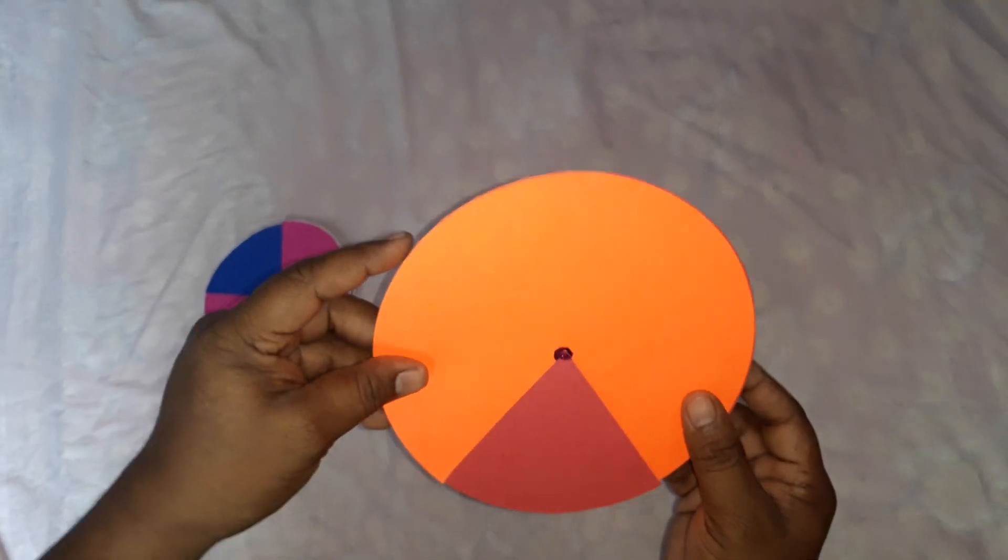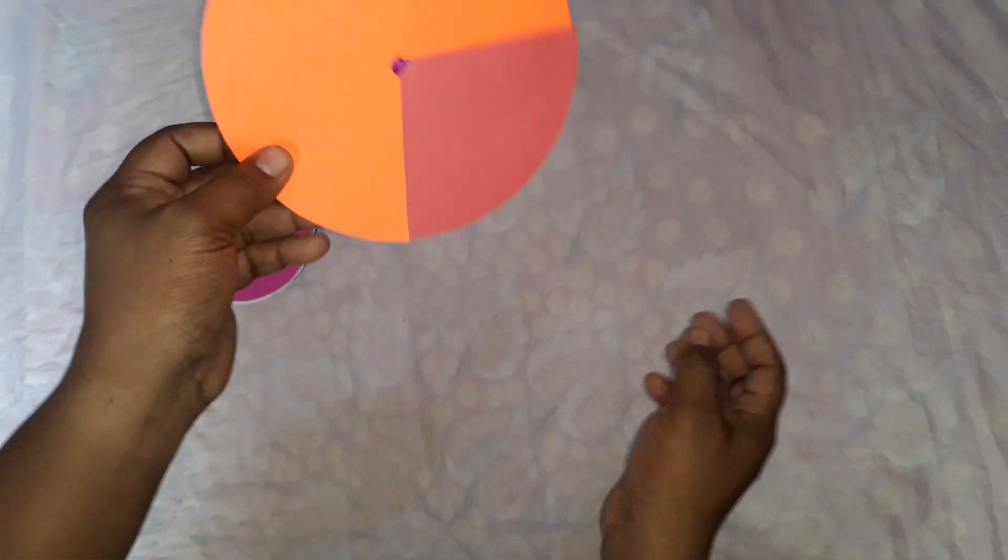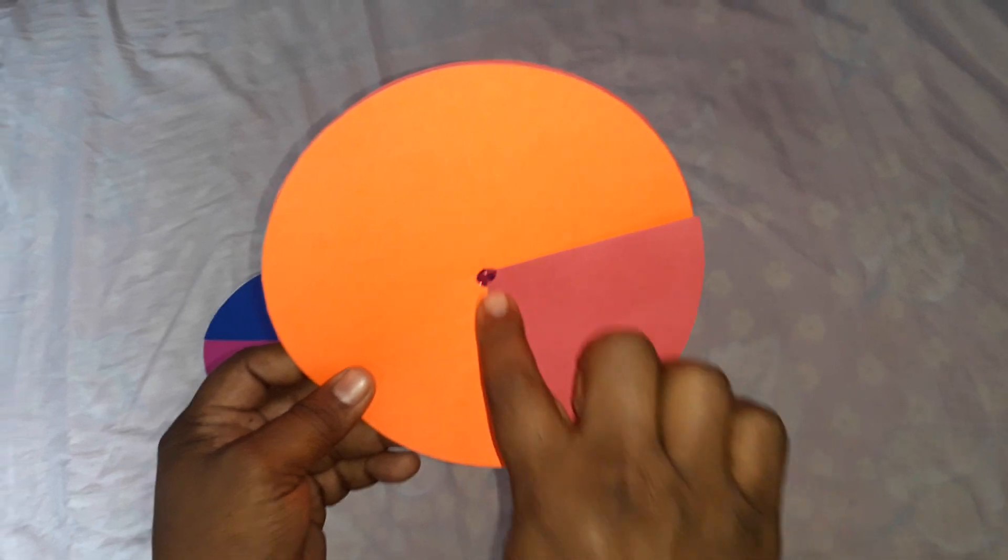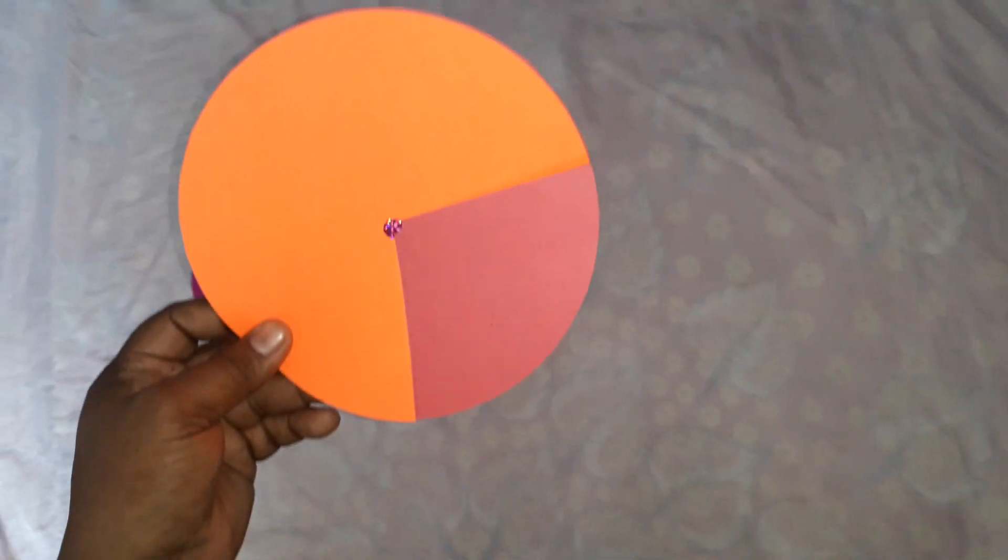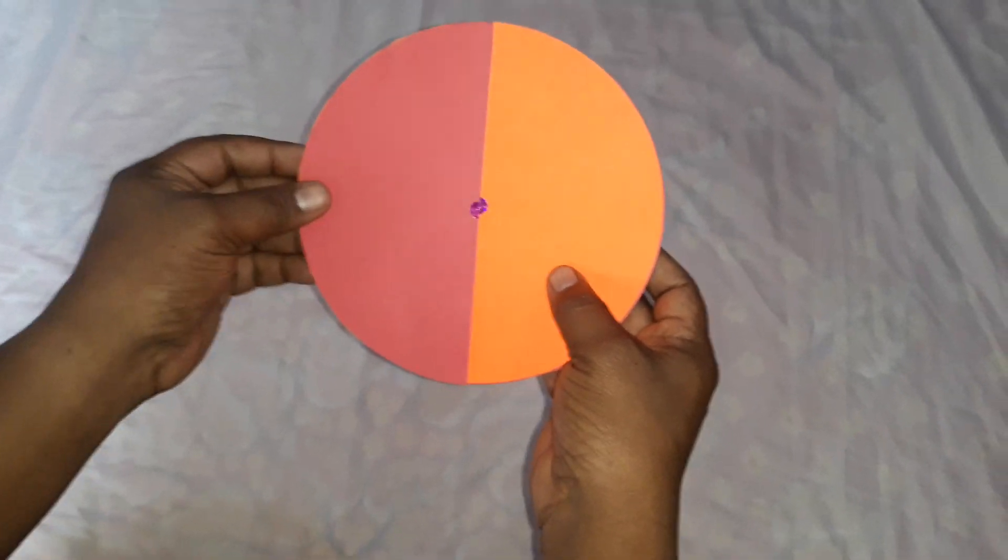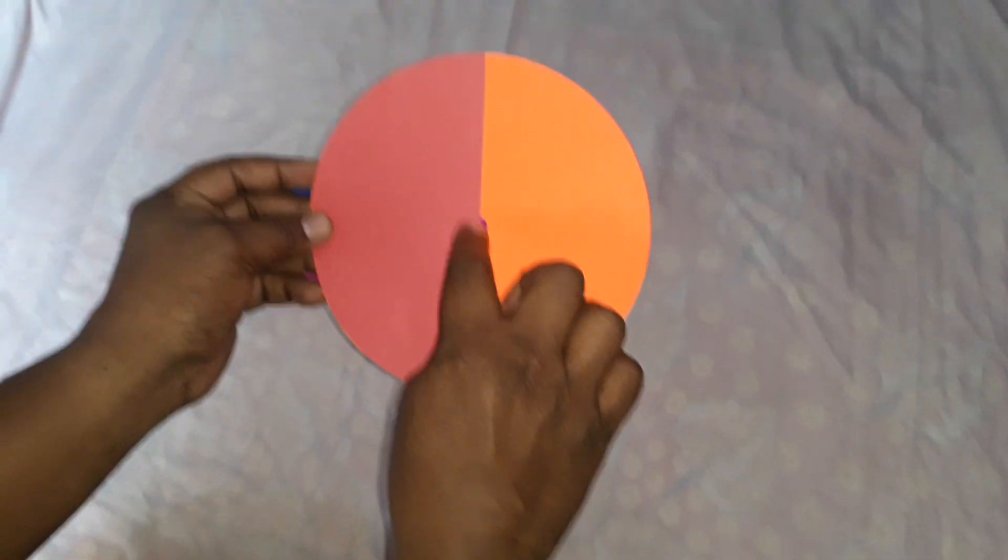We can also explain the point that radii of circles are always same and diameter is equal to twice of the radius.